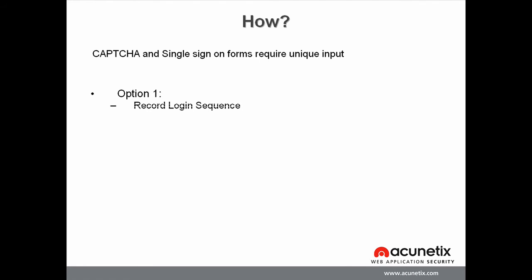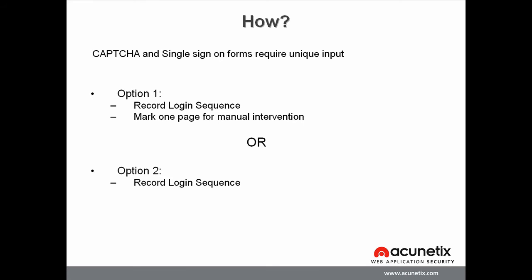In the first option, we will record a login sequence to scan the password protected area and mark one page for manual intervention. Once the scan is launched, Acunetix will start crawling the website and automatically login to the password protected section. When the manual intervention page is being crawled, a window will pop up to allow the user to enter the desired input. In the second option, we will again record the login sequence for the password protected area, record and store the details needed to crawl the three forms since they always require the same details, and mark only one page for manual intervention — in this case the captcha or single sign-on form. For this example, we will automate most of the process and use the second option.